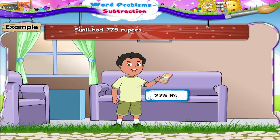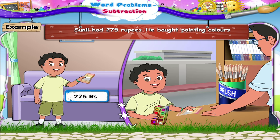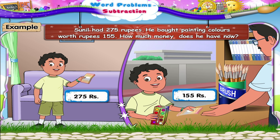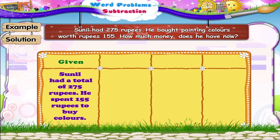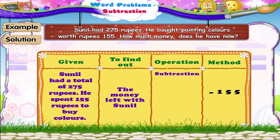Sunil had 275 rupees. He bought painting colours worth 155 rupees. How much money does he have now? It is given that Sunil had a total of 275 rupees and he spent 155 rupees to buy colours. We have to find the money left with Sunil, so we shall subtract 155 rupees from 275 rupees.